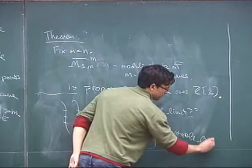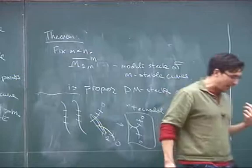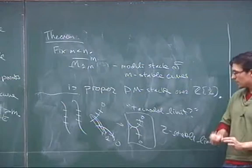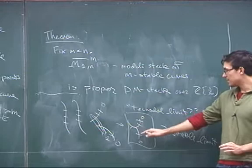Remember yesterday I said you can never have a stable modular compactification with nodes, cusps, and tac nodes. Here I'm telling you that you do get something with nodes, cusps, and tac nodes, but what inevitably crops up is these P¹s with just two distinguished points.